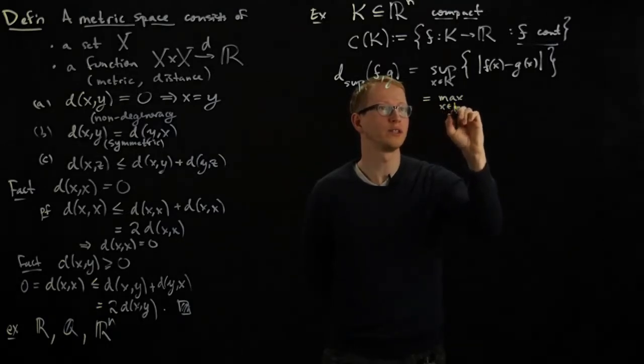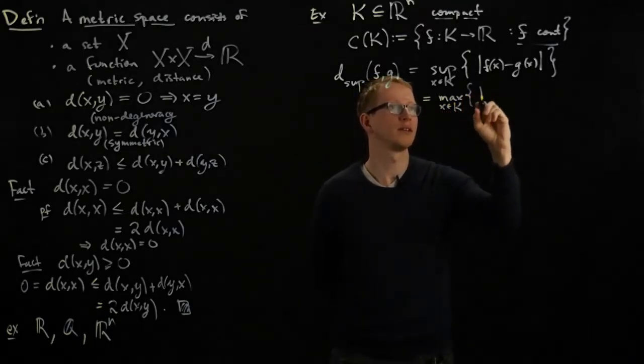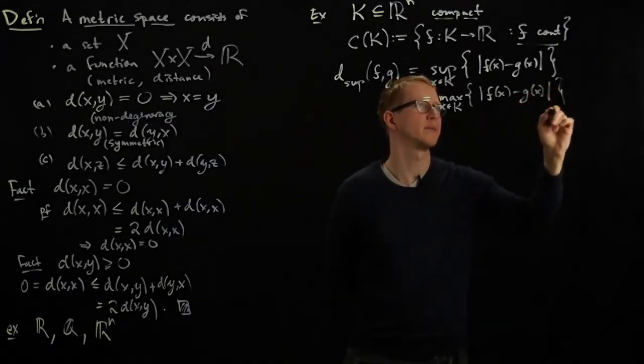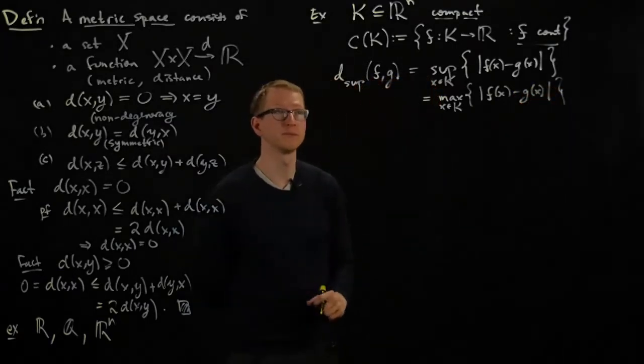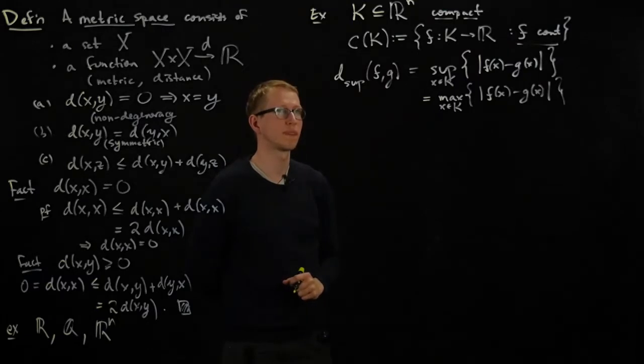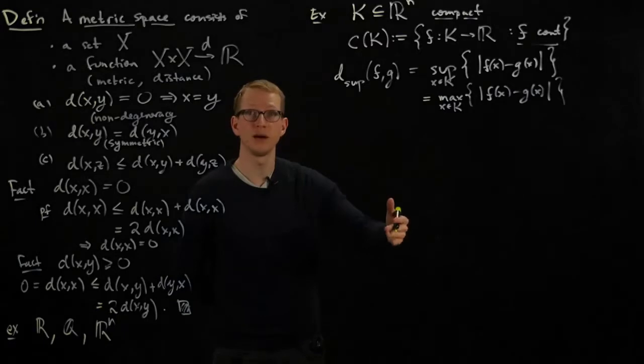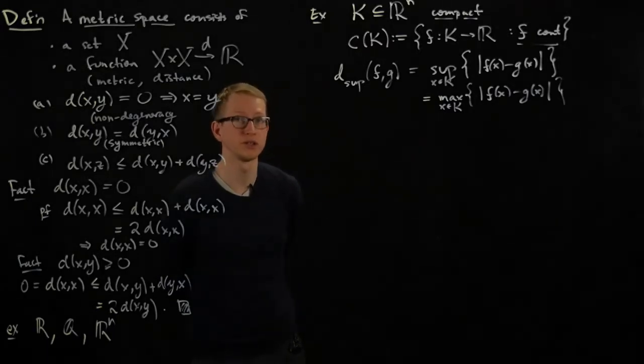And it follows from these two assumptions that this sup is actually equal to the max, because for a continuous function on a compact set, we know that the maximum distance is always achieved, because the image of a compact subset of R^n is compact because the function is continuous.